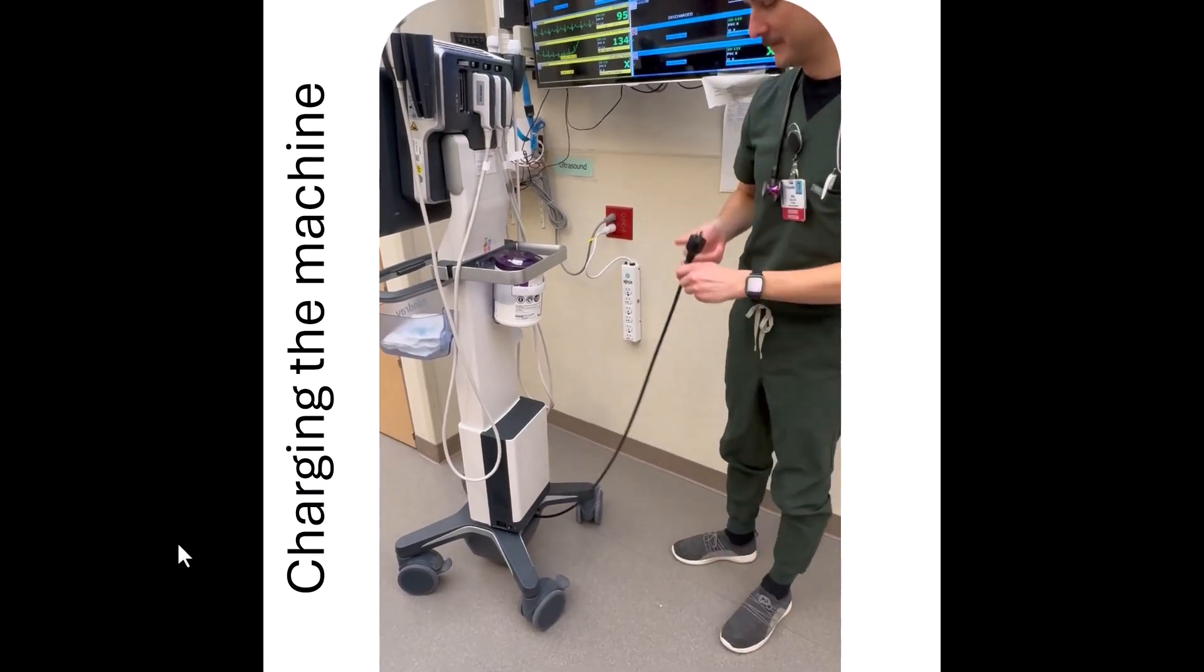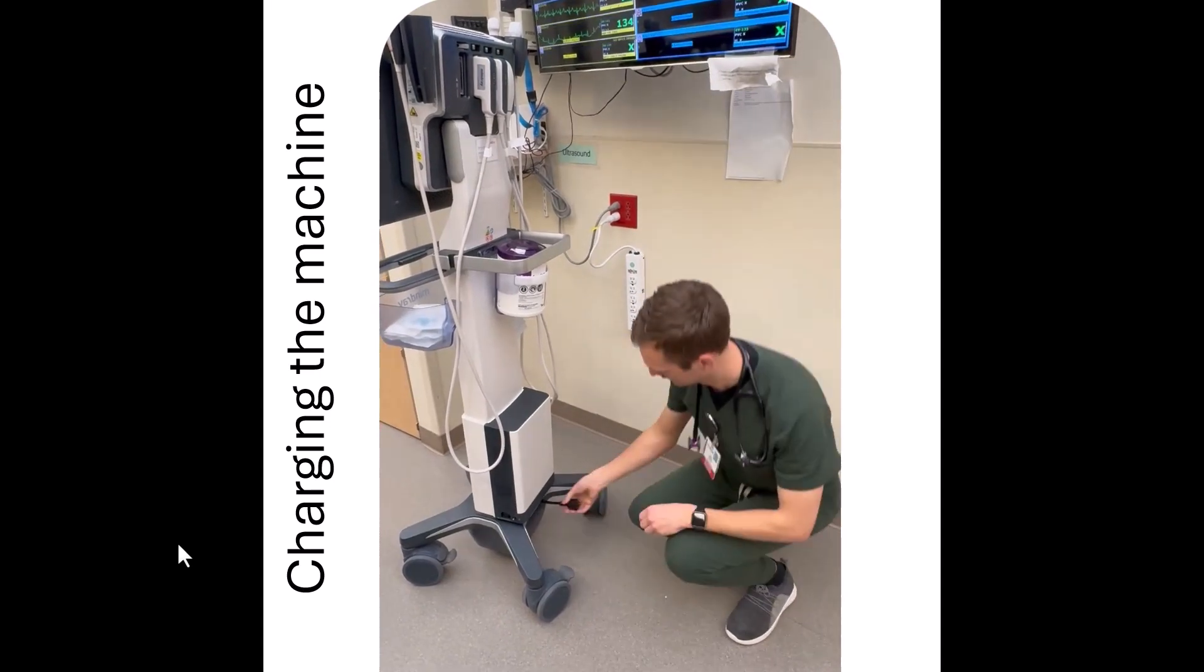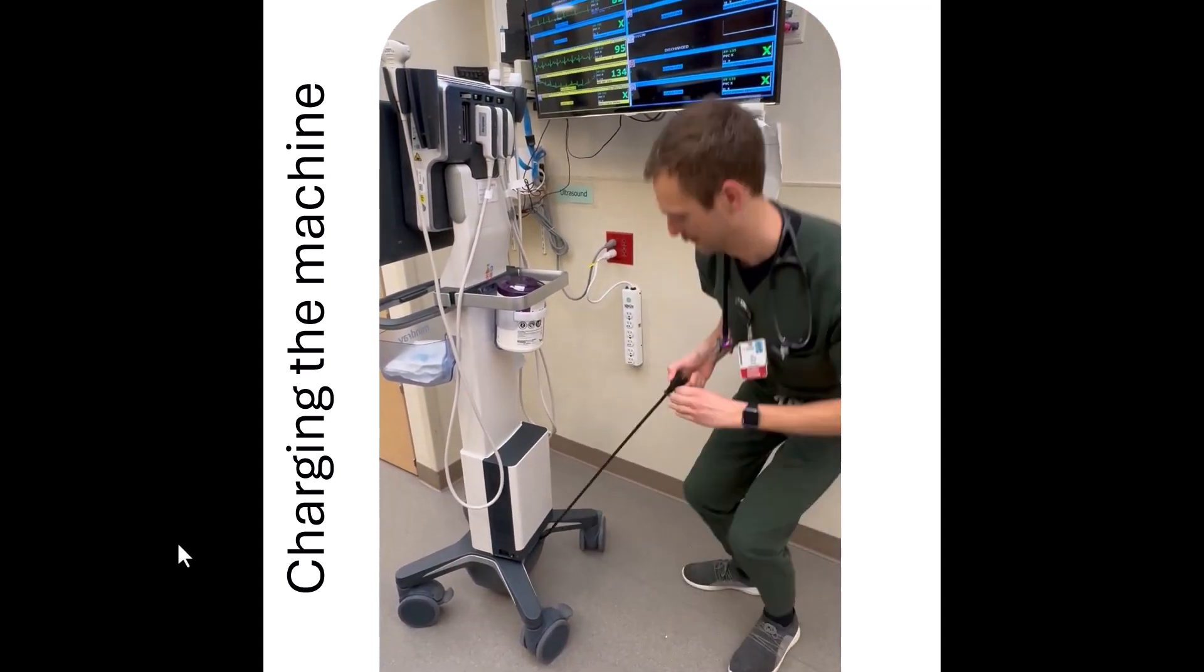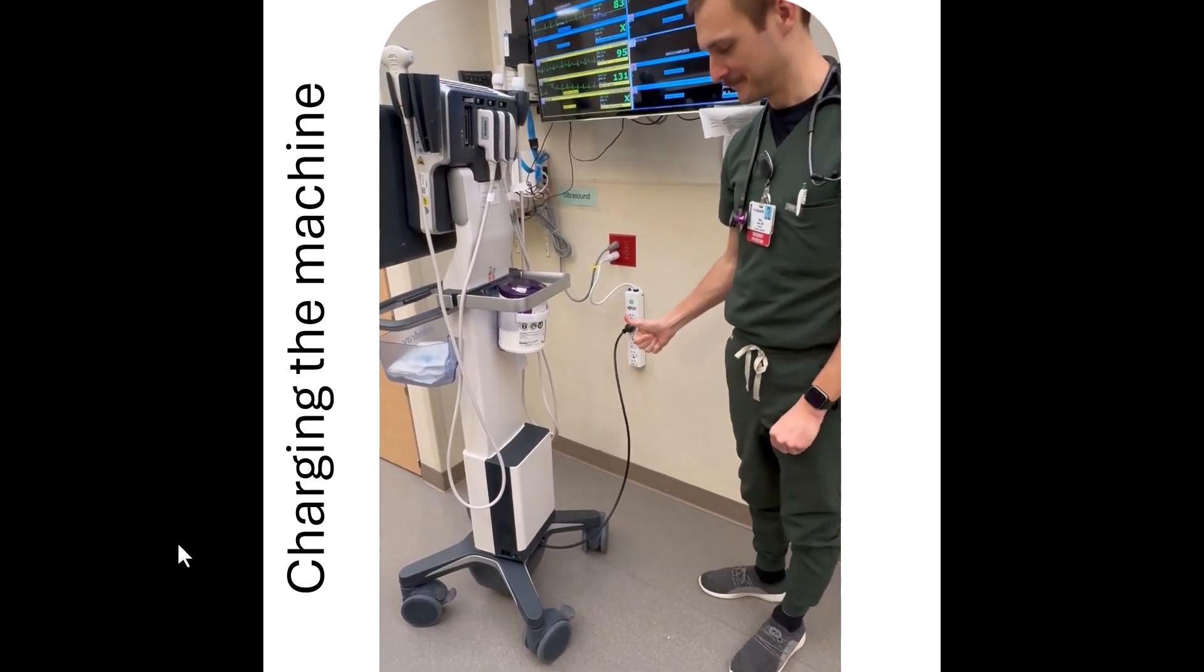To charge the machine, there's this retractable cord on the back of the machine. Pull it, and to get rid of the cord, you're going to do a gentle pull, and it'll tuck back in. Please make sure that you charge the machine by plugging it into the wall whenever you're done using it to ensure that it's fully charged for the next user.